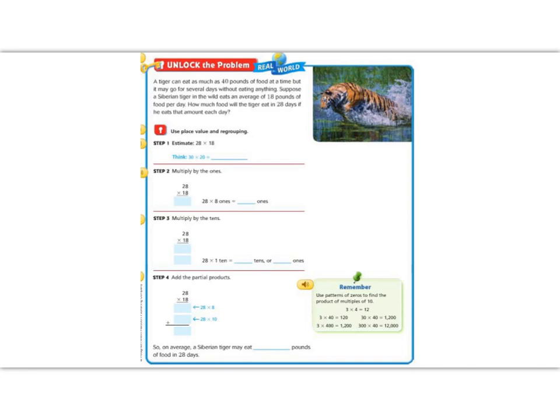Let's practice this by beginning with our unlock the problem. It says, a tiger can eat as much as 40 pounds of food at one time, but it may go for several days without eating. Suppose a Siberian tiger in the wild eats an average of 18 pounds of food per day. How much food will he eat in 28 days?